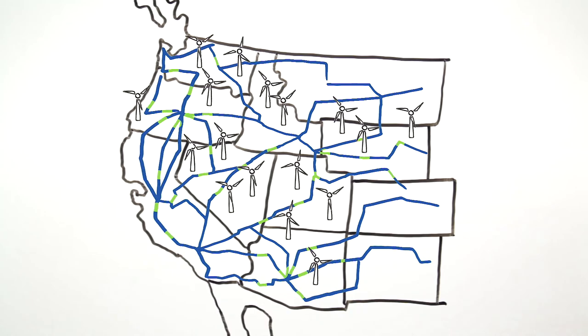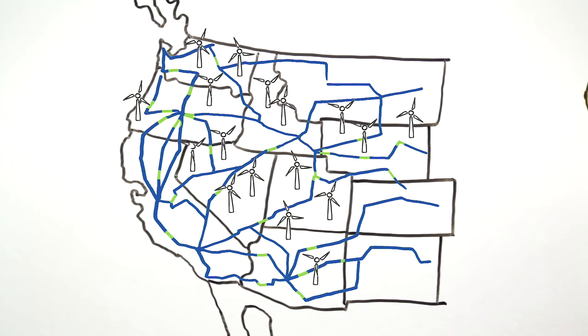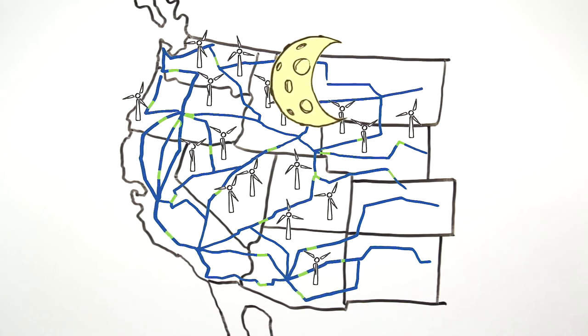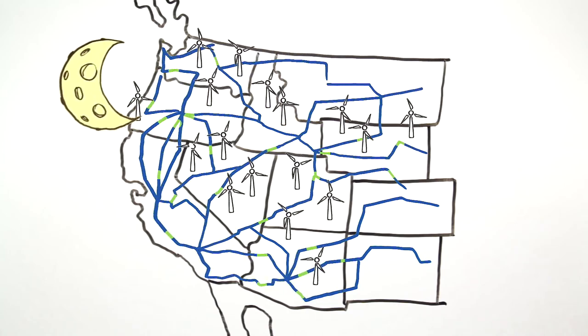For example, California can use renewable wind energy produced outside the state during nighttime hours, further reducing our dependency on less clean resources.